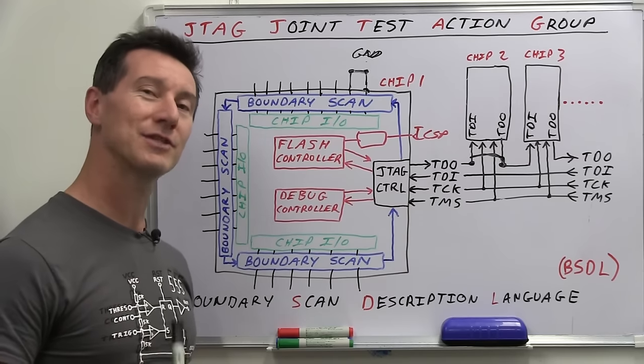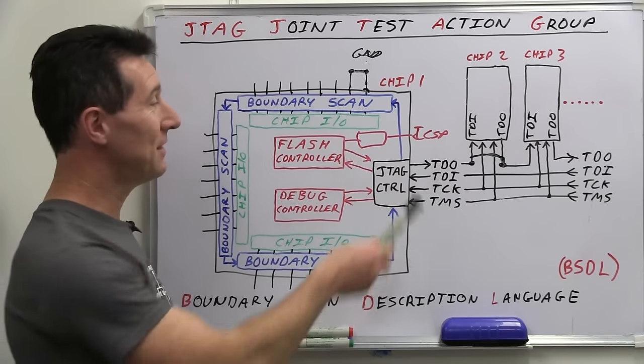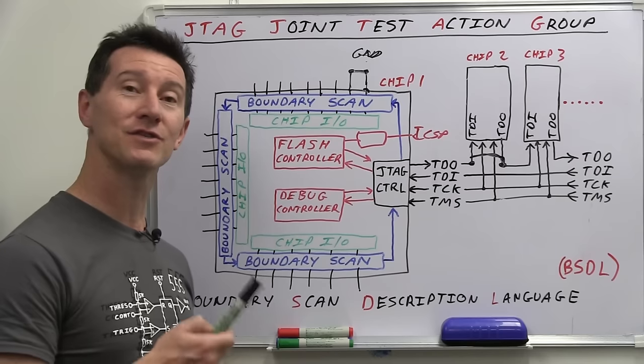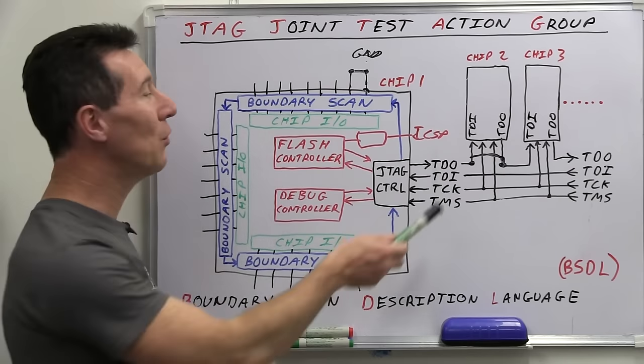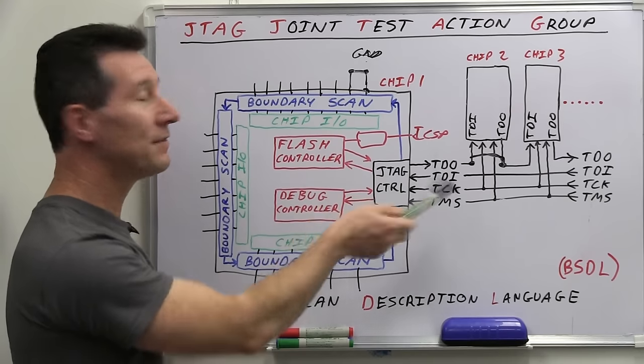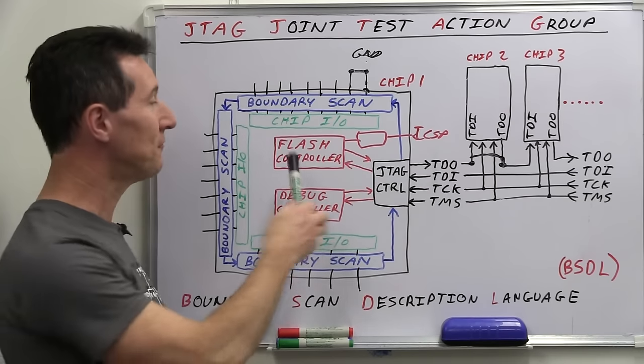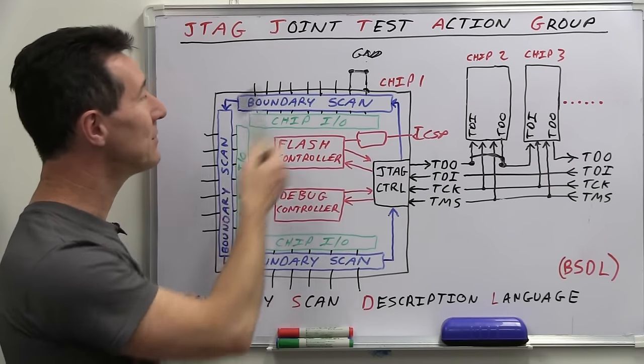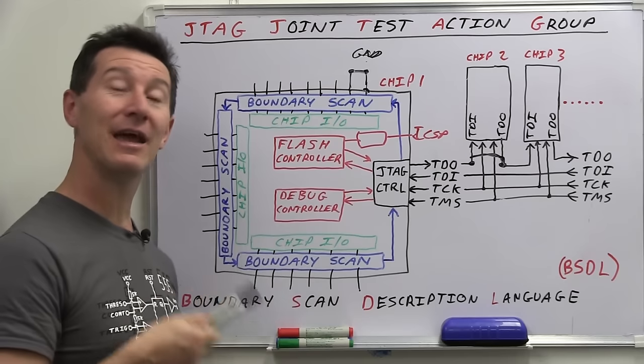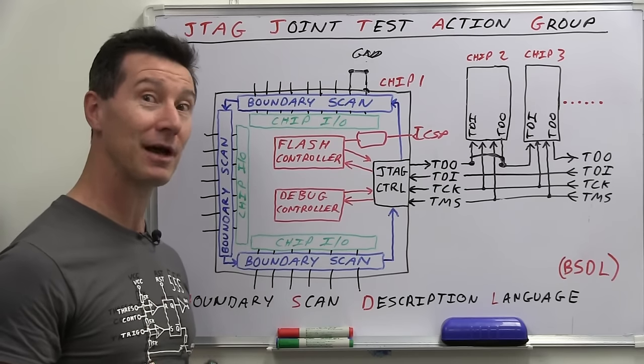So your JTAG system software that you're using on your PC or your test system will be able to read that BSDL file and know exactly how to talk to and operate and have all the IO mapping and the pin mapping and all the internal stuff for interfacing with a particular chip on that JTAG daisy chain. And yes, I know what some people are thinking. If there's a JTAG header, as you've seen in many of my teardowns, inside a product, not only can you hook up to it and read the data back out, potentially read the firmware and everything else, but you can also access the individual pins via the boundary scan here, and you can use that to hack products.